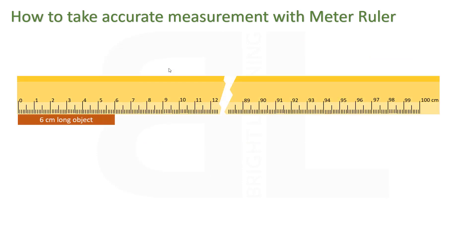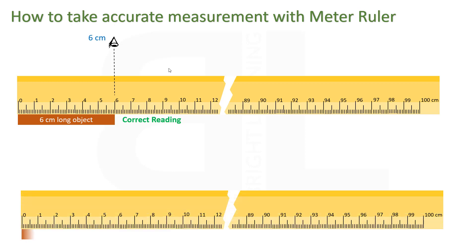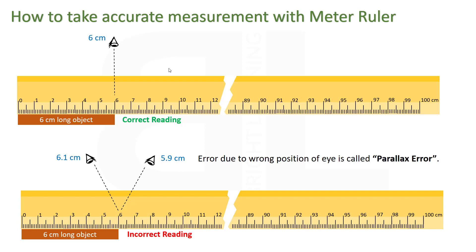How to take accurate measurement with a meter ruler? In order to measure an object using a meter ruler, place the object with the side of the meter ruler and place your eye vertically on the meter ruler. This will give you the correct reading. If you keep the wrong position of the eye, it will give you an incorrect reading. Such an error that occurs due to wrong position of the eye is called parallax error.